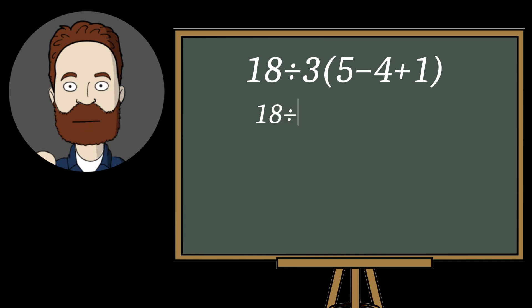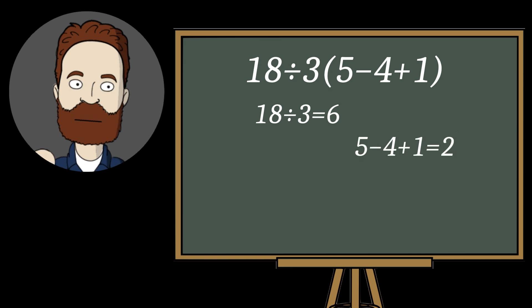18 divided by 3 equals 6. Then inside the parentheses, 5 minus 4 plus 1 equals 2. And 6 multiplied by 2 equals 12.